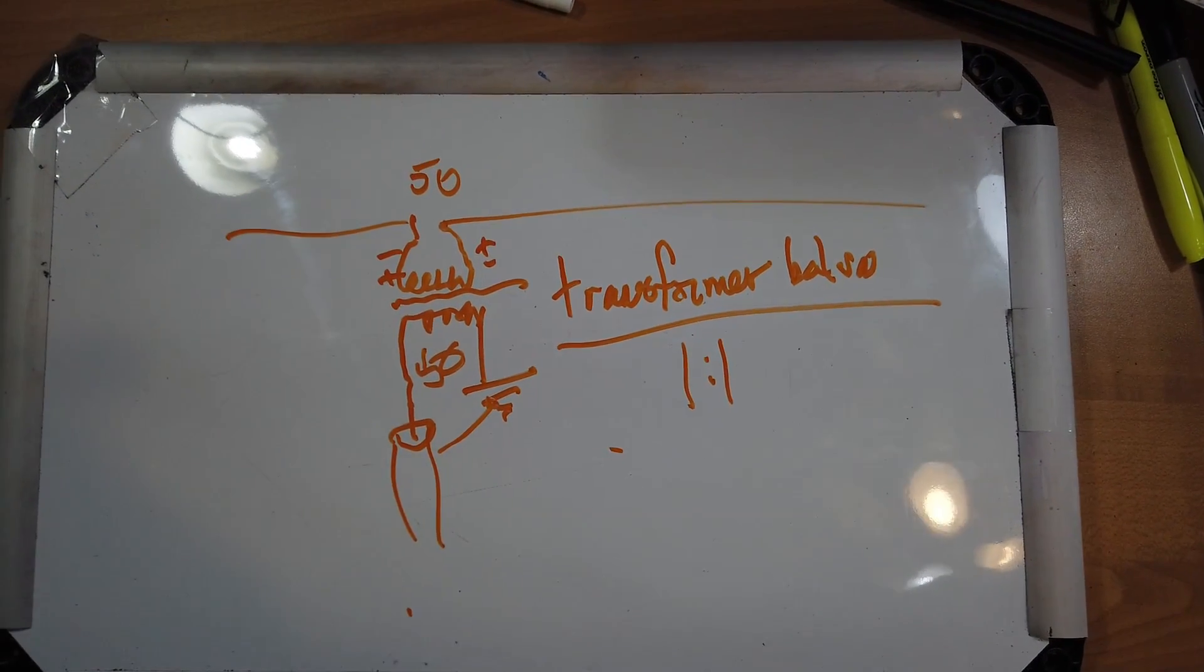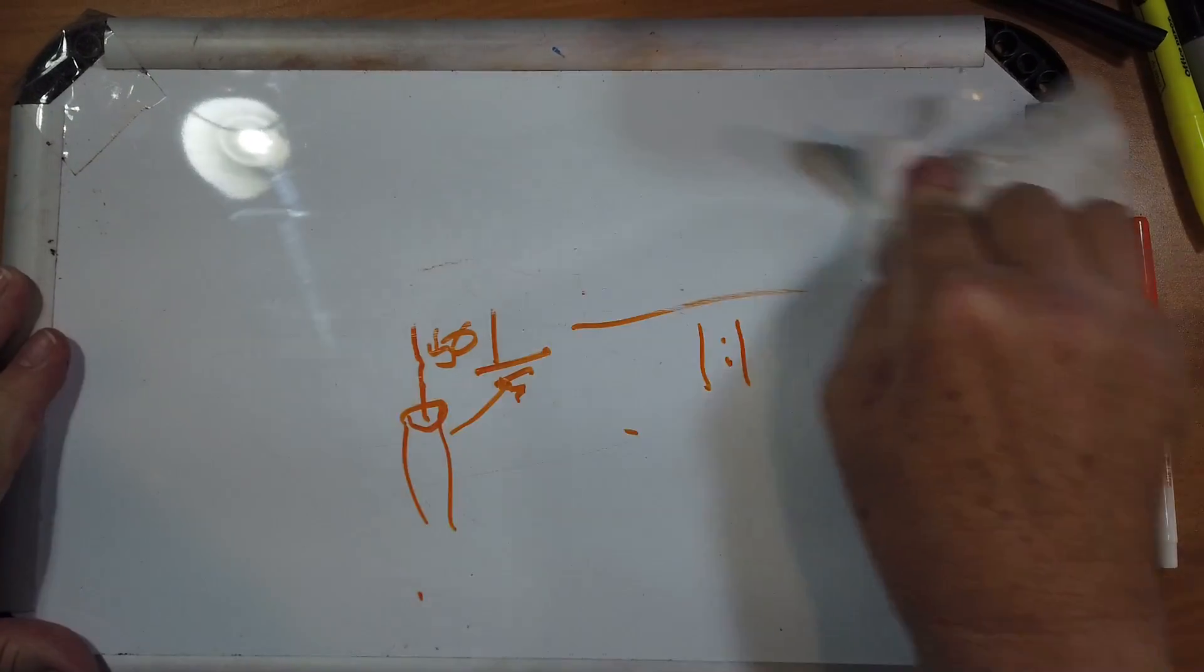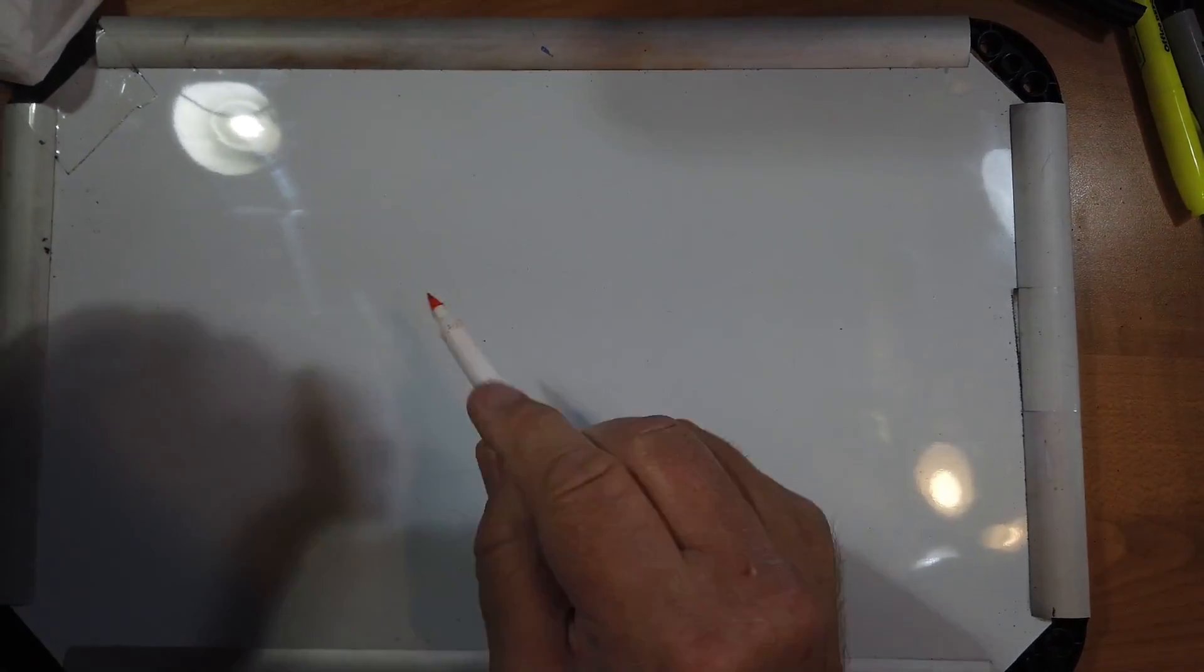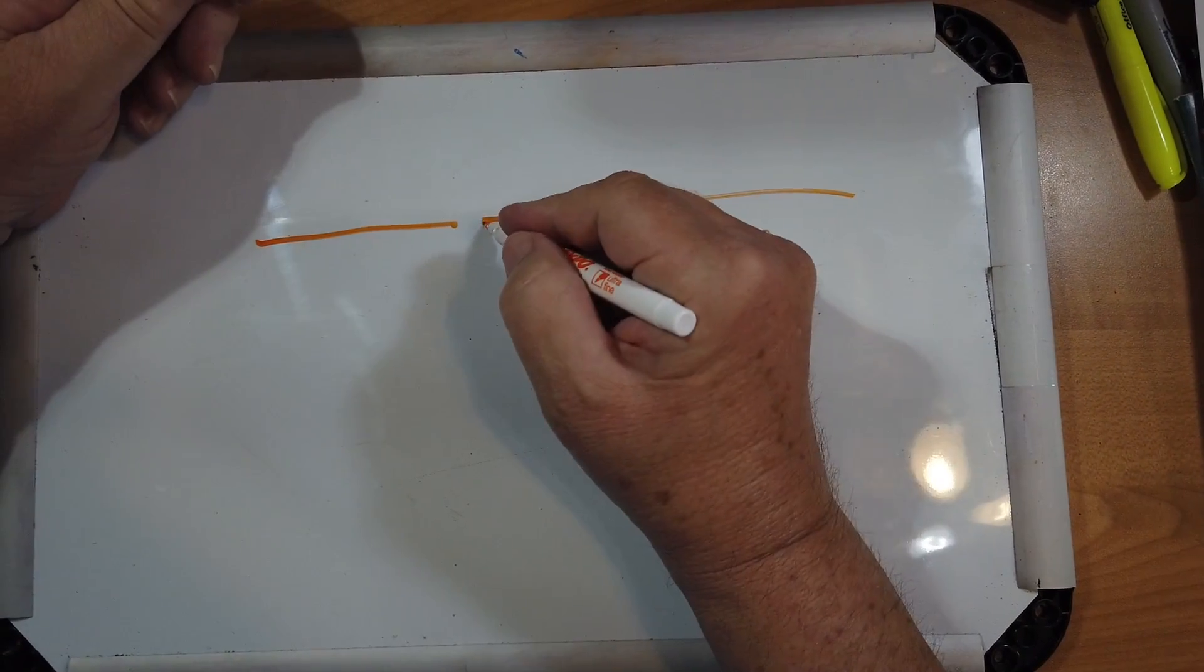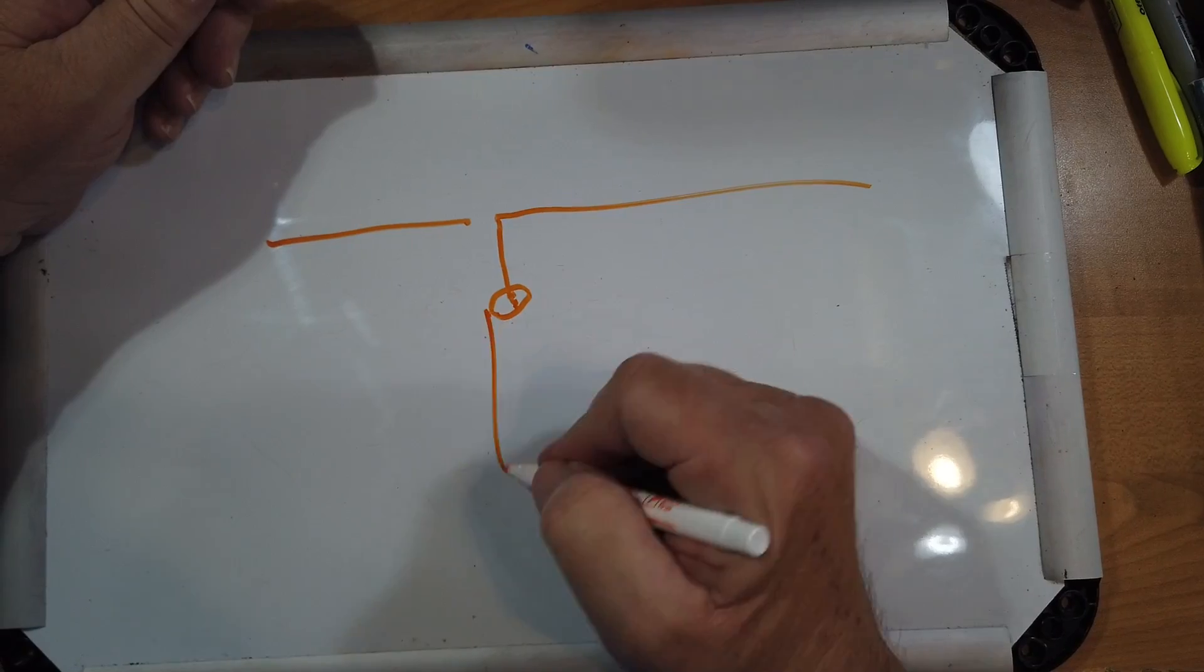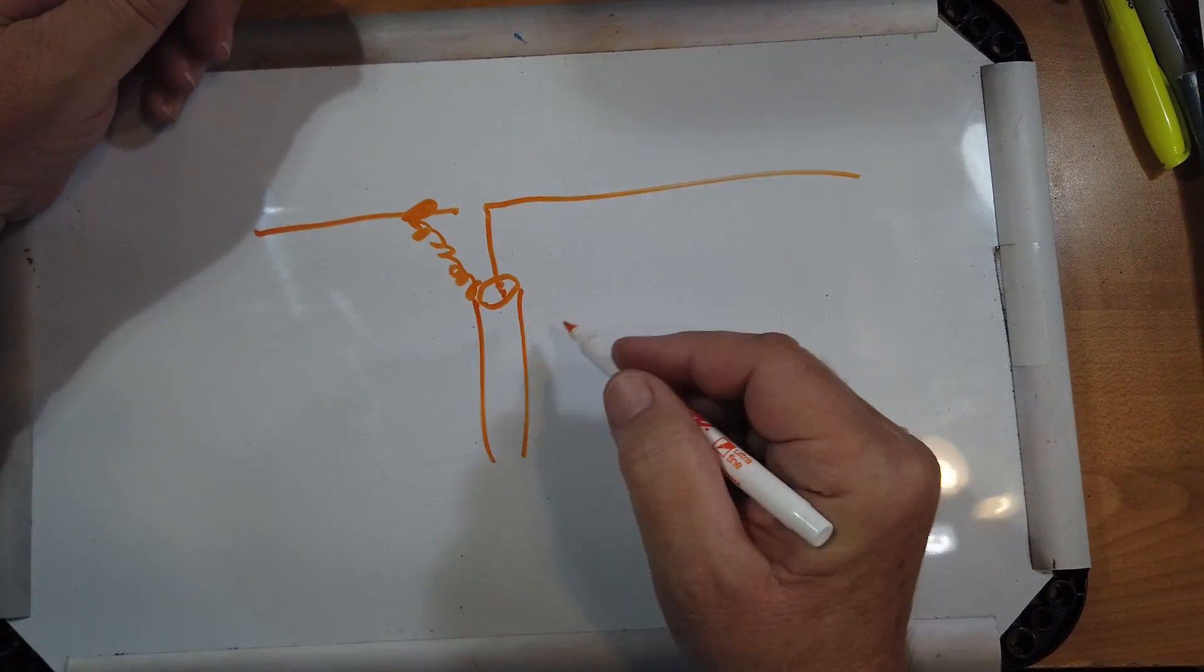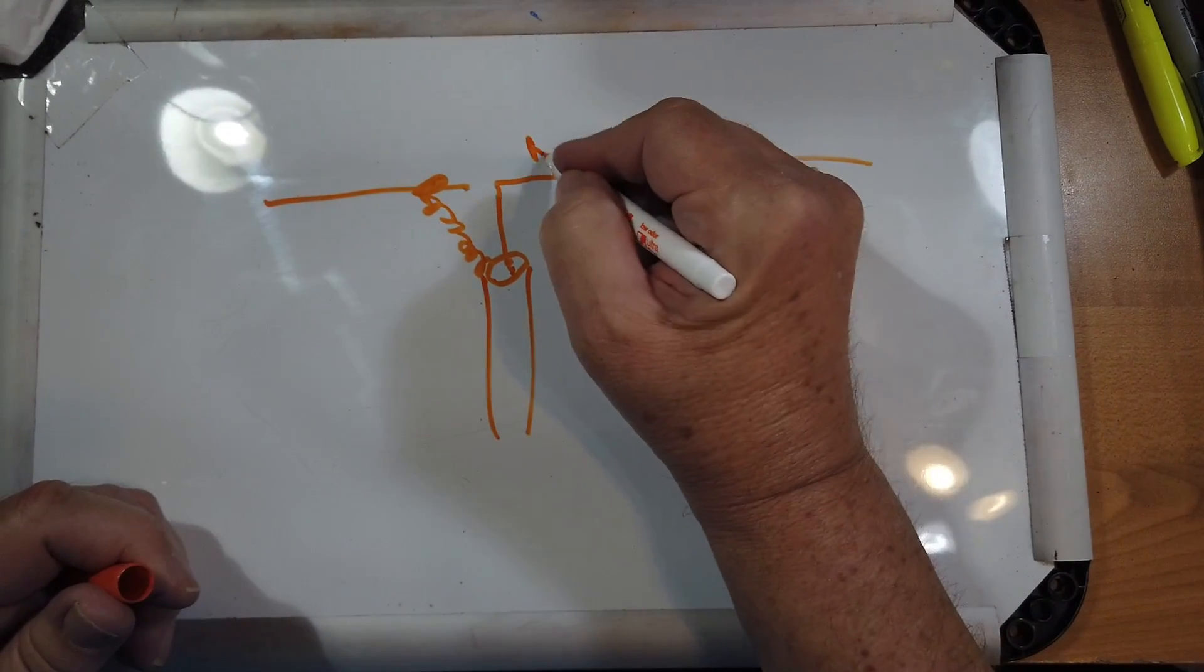So now, what happens if we connect this directly to it? Okay, we've got this connected, say, to the center of the coax, and then we've got the coax down here, and we take the shield and connect it over here. This is unbalanced to balanced.